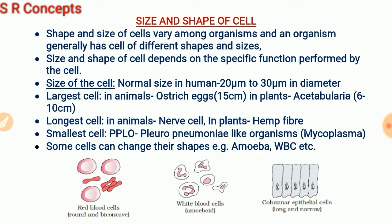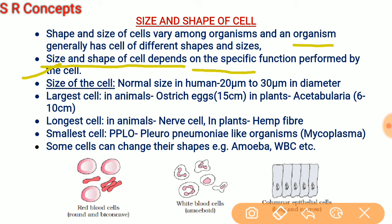Now let us talk about the size and shape of the cell. There may be different shapes and sizes of cells in different organisms, and even within a single organism, cells can differ in shape and size. Importantly, the size and shape of a cell depend on the specific function performed by that cell — the shape and size are directly related to the cell's function.